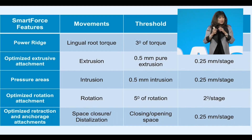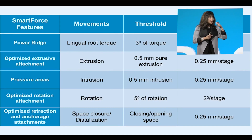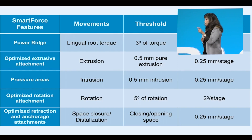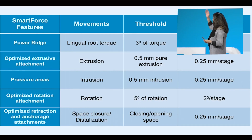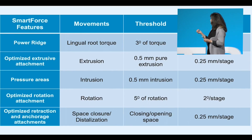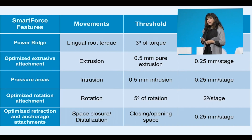These are the defaults for the Invisalign system by Align Technology. The defaults for the different aligner companies are also in the little book that came in your handout yesterday. Basically, if you needed lingual root torque, the maximum velocity is one degree per stage or one degree per aligner. If you're intruding or extruding, it's 0.25mm per aligner. If it's rotation, it's two degrees per aligner. And if you're opening or closing space, it's 0.25mm per aligner.